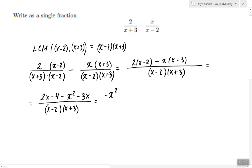So we have negative x squared minus x minus 4 divided by x minus 2 times x plus 3.